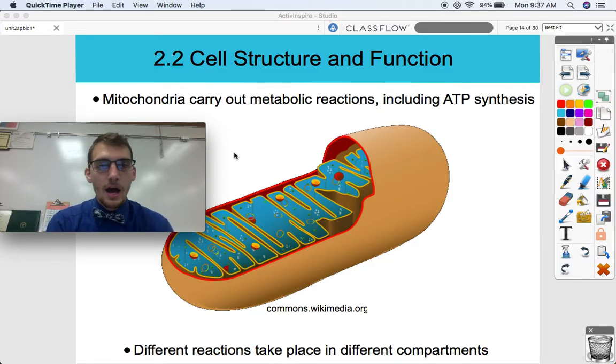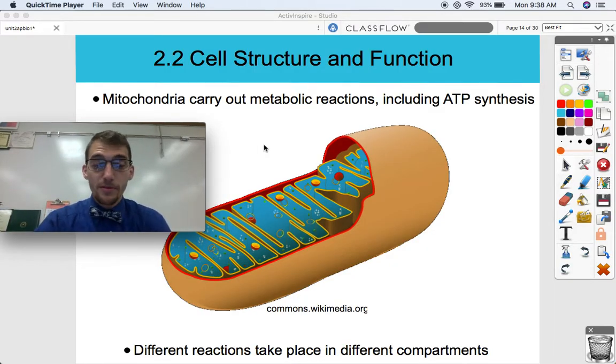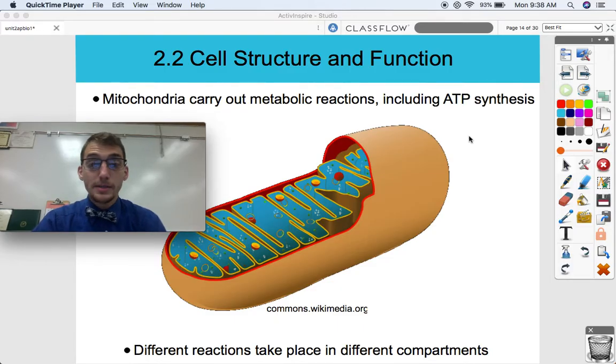So that's cellular respiration and photosynthesis. We're going to talk about that a lot. So as we know, mitochondria, the powerhouse of the cell, carries out metabolic reactions, and most notably, ATP synthesis. ATP, a cell cannot function without ATP. Life cannot function without ATP. And different reactions, different metabolic reactions take place in different compartments of the mitochondrion. If you remember from the last video, a mitochondrion has a double membrane. So it has an outer membrane and an inner membrane.